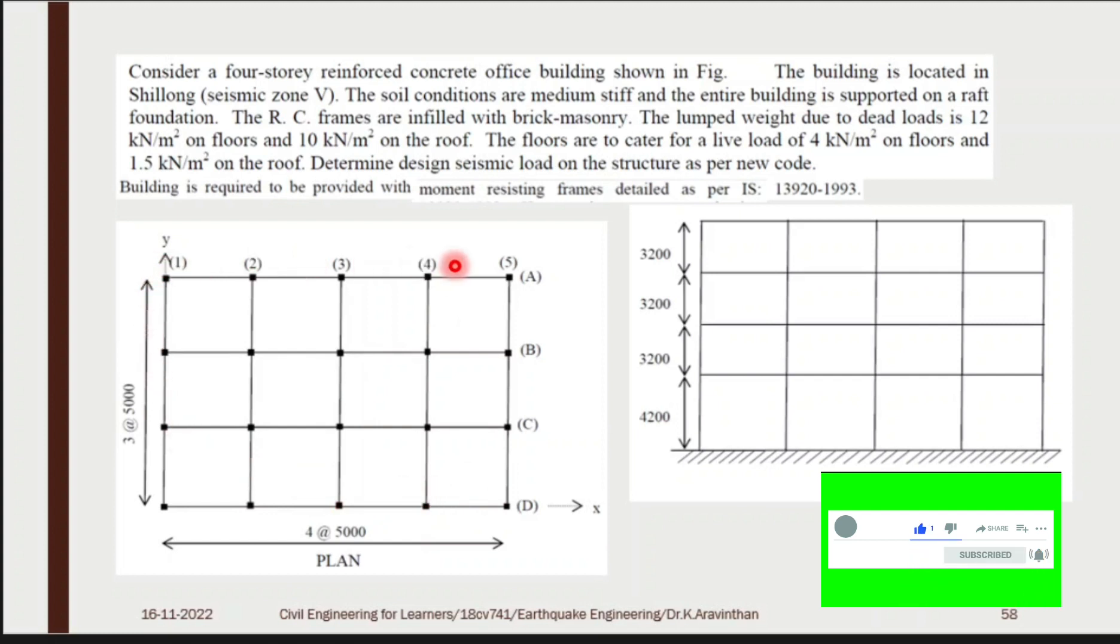So here you can see those kind of structure and the distance between two columns is 4 at 5000. That means you have four number of bays: 1, 2, 3, 4. Each bay carries 5000 mm, that is 5 meters. So total the dimension is 20 meters, and at other side you have 3 into 5000, that is 15000 mm, which is 15 meters.